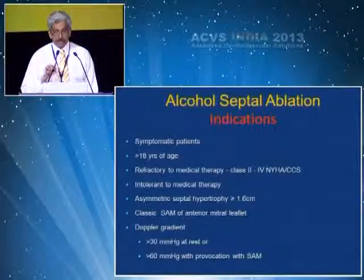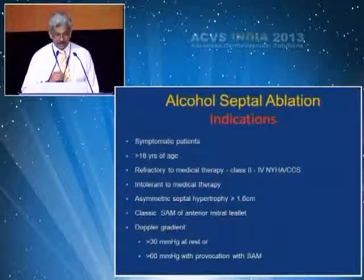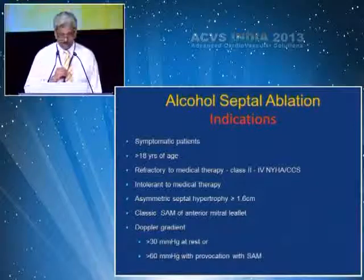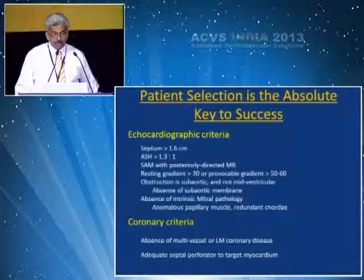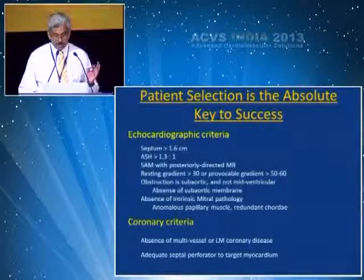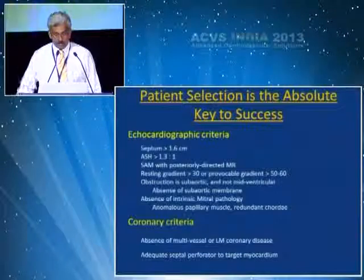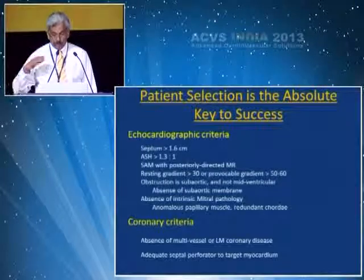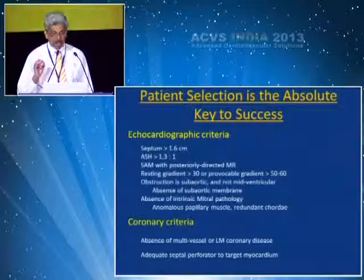The indications for alcohol septal ablation are symptomatic patients over 18 years of age who are refractory to medical therapy (NYHA class 2 of 4), or intolerant to medical therapy, with ASH greater than 16 mm, classic SAM of the anterior mitral leaflet, a Doppler gradient of 30 mmHg at rest or 60 mmHg on provocation with SAM. The key to success is selecting the right patient. Echocardiographic criteria include septum greater than 16 mm, asymmetric septal hypertrophy ratio of 1.3:1, SAM with posteriorly directed MR, resting gradient ≥30 or provocation gradient >50-60, obstruction should be subaortic and not mid-ventricular, absence of conditions mimicking it like a subaortic membrane, and absence of intrinsic mitral valve pathology.